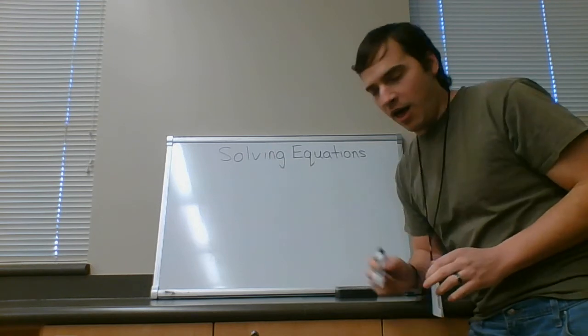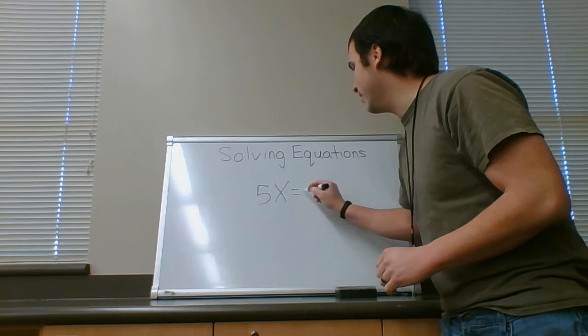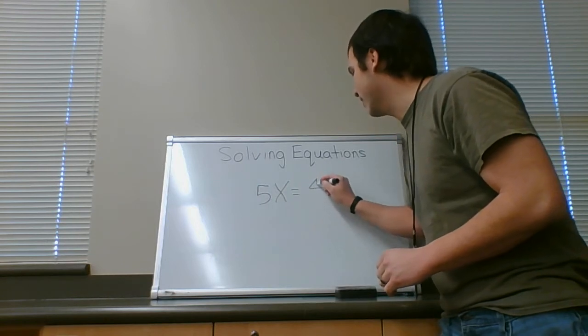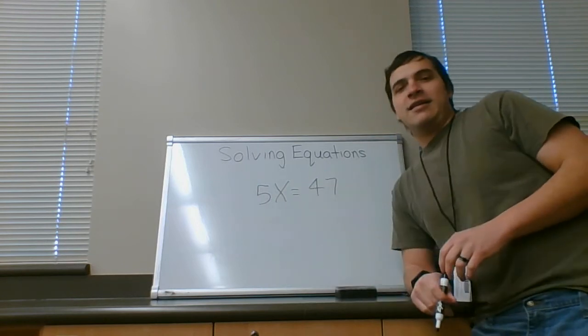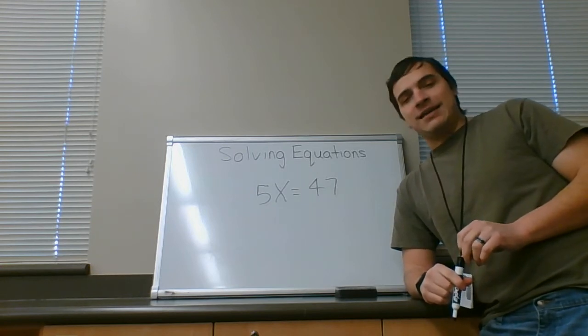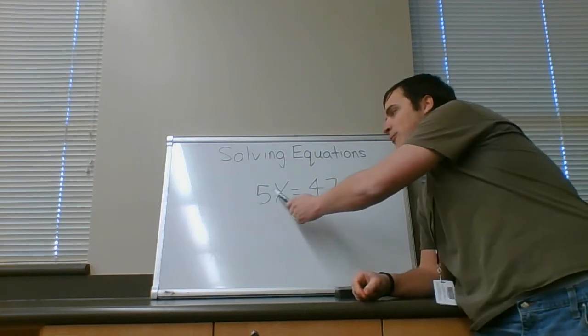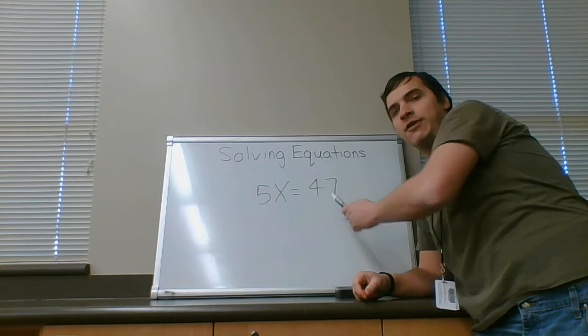Now, what about if you have a multiply? For instance, 5x equals, let's say, 47. Spoiler alert, this is going to have a decimal. That's okay. Now, in order to solve this problem, we have to figure out 5 groups of how many will equal 47.